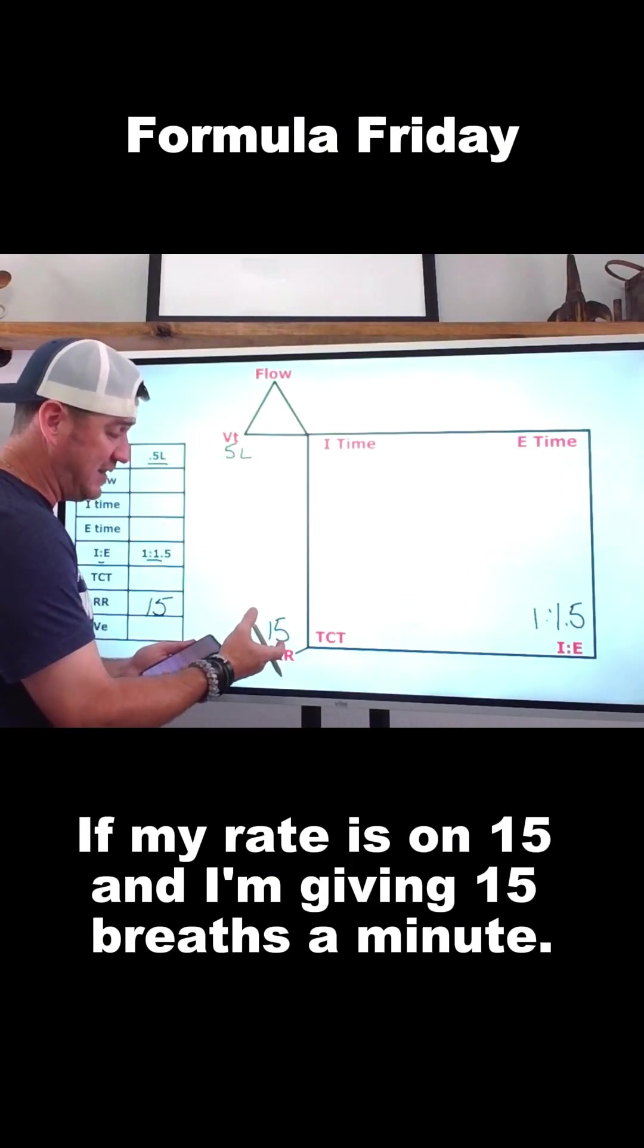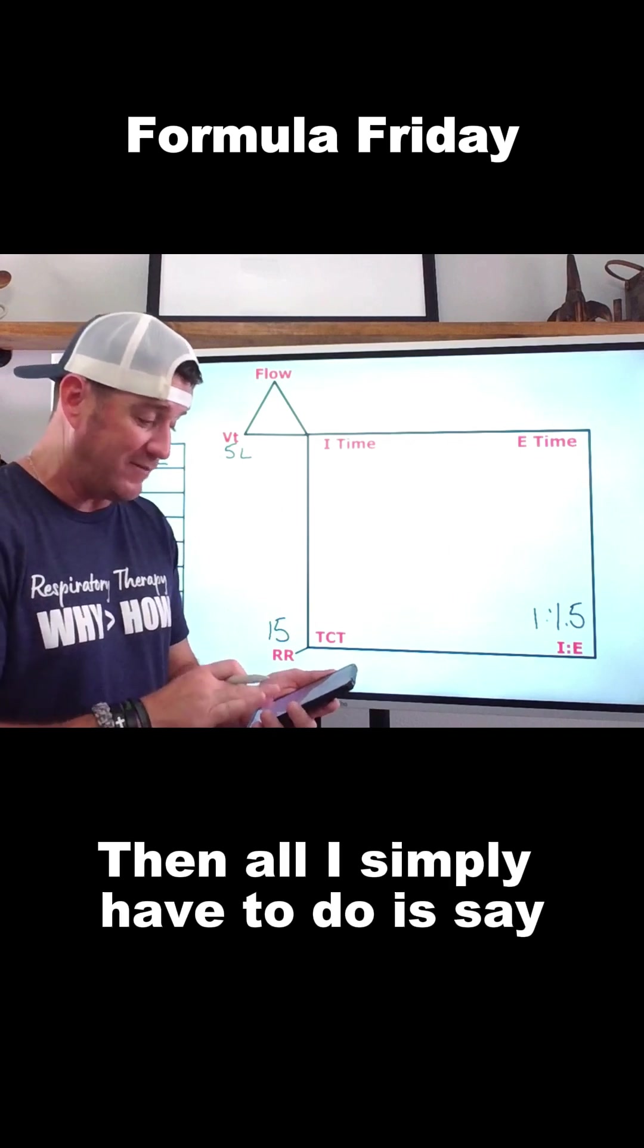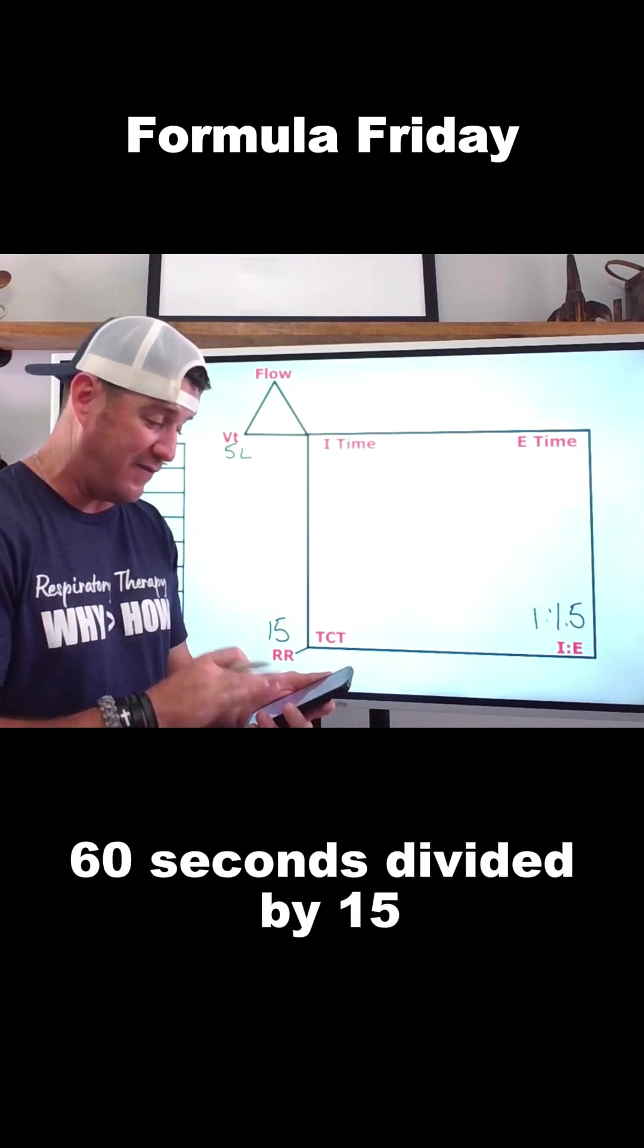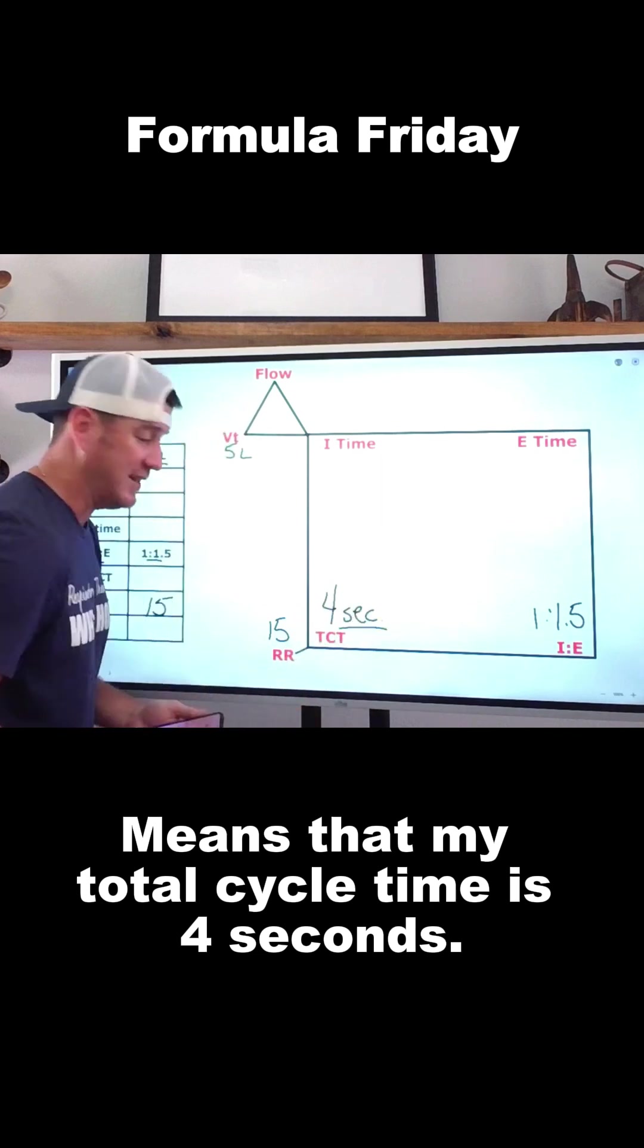If my rate is 15 and I'm giving 15 breaths a minute, then all I have to do is say 60 seconds divided by 15 means that my total cycle time is 4 seconds.